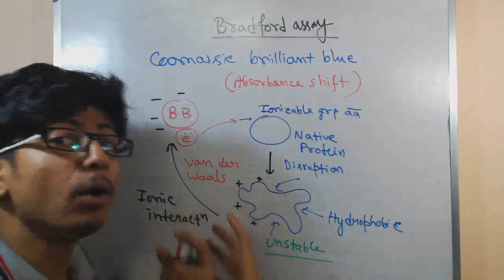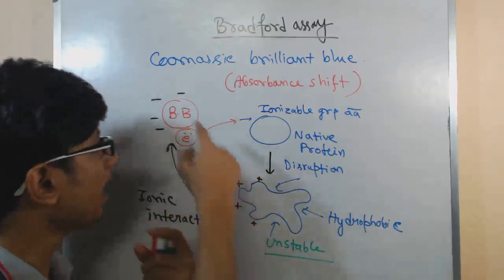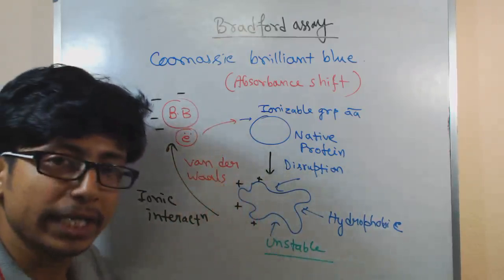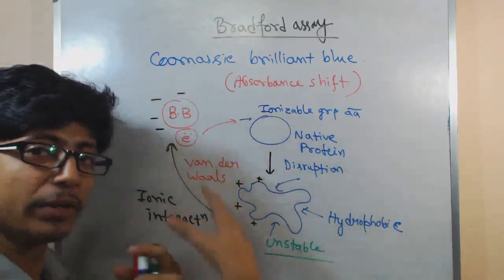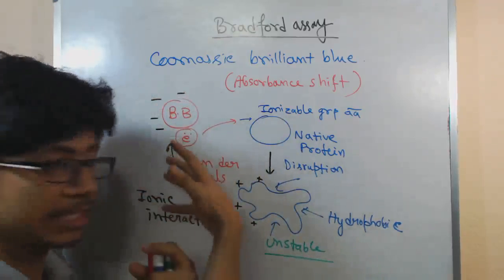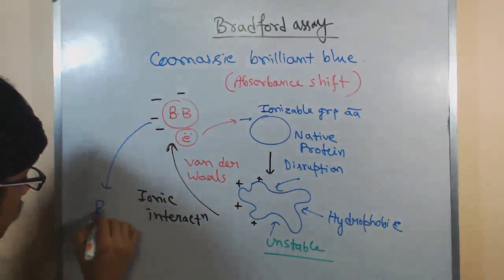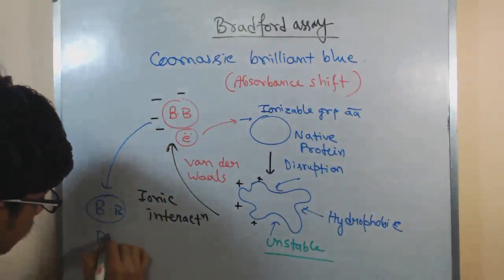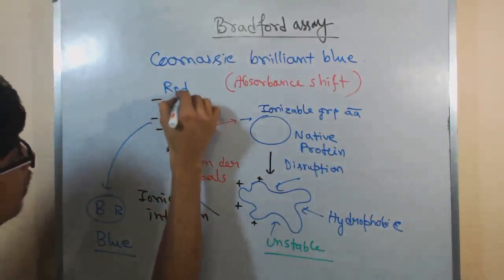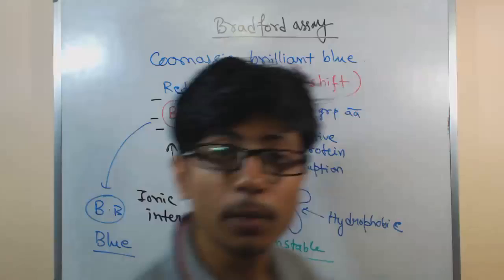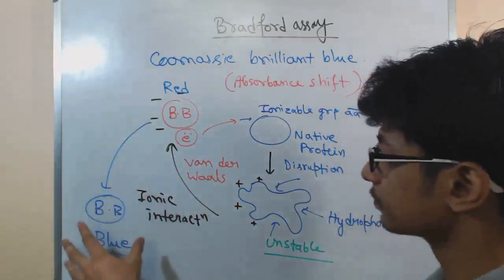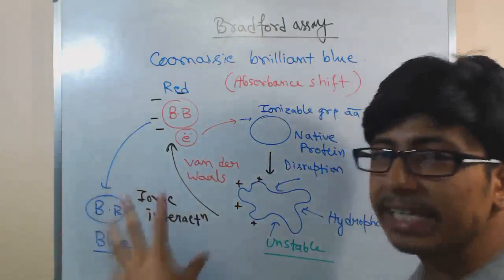Now it becomes anionic in nature. Previously it was cationic. Now it is anionic form in nature. This is in bound form. It turns the color of this dye to blue. First it was red, but now it is turned into blue coloration and this thing we can detect.